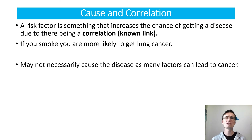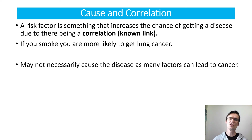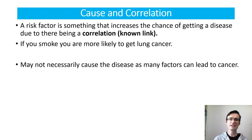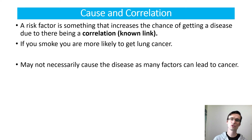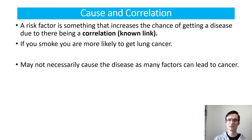There are three important concepts around risk factors and correlation. A risk factor is something known to increase the chance of getting a disease due to a correlation — a known link between two things. For example, if you smoke you are more likely to get lung cancer, but smoking doesn't necessarily cause it. Something else, like a random mutation, could have caused the lung cancer. A correlation is a known link; causation is when one thing has definitely caused another, and we must be careful to distinguish between them.